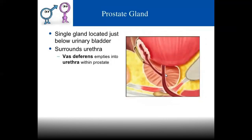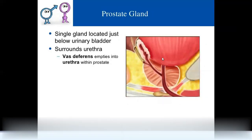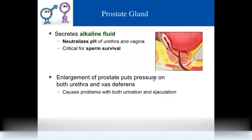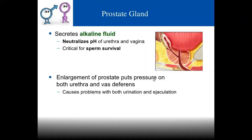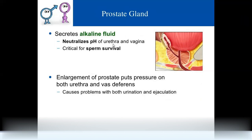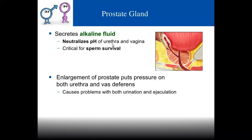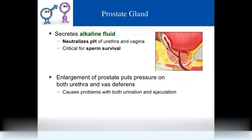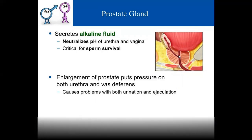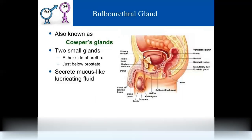The prostate gland is located below the bladder and connects with the vas deferens, emptying into the urethra — similar to the seminal vesicle. Semen is made up of secretions from the seminal vesicles and prostate gland. The prostate secretes an alkaline fluid that neutralizes the acidic environment from uric acid, allowing sperms to survive. If the prostate enlarges due to disease, it puts pressure on the urethra, causing problems with ejaculation and urination — this relates to Cowper's glands or bulbo-urethral glands.